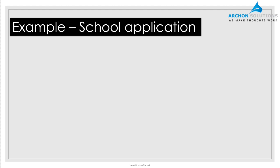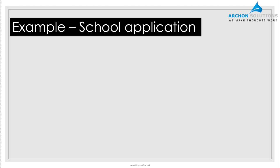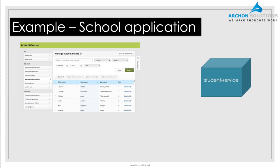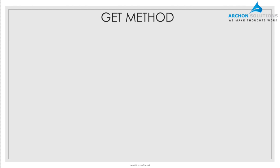Let's take an example of a school application — an internal school application that maintains records of students. It shows details of each student per class, their academic background, and their scores. This application is dealing with student data. There is a front-end website, a back-end service that manipulates the information, and a database where student information is stored. These three components interact to form the school application.